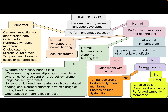If the tympanogram is abnormal but not consistent with otitis media with effusion, perform a hearing test. If hearing is normal, differential diagnosis includes tympanosclerosis, perforated tympanic membrane, or Eustachian tube dysfunction. If hearing is abnormal, the patient also needs referral. Differential diagnosis includes adhesive otitis, ossicular discontinuity, or perforated tympanic membrane.